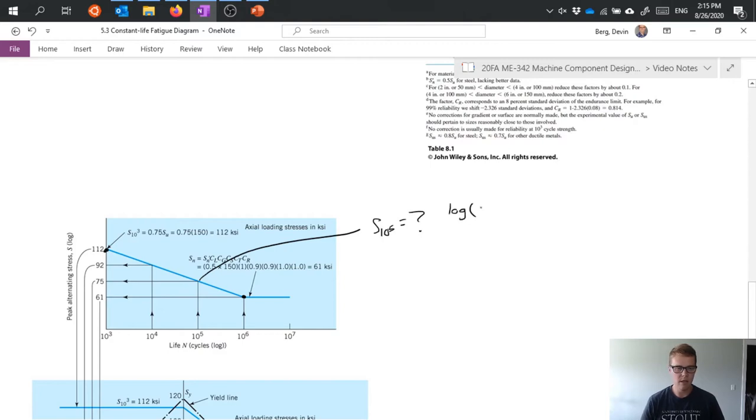So to start our linear interpretation we basically take two known quantities and do like a rise over run type calculation. So I need to remember this is log and my first point that I know is 112 over here that's my 10 to the third limit and my other point that I know is my endurance limit of 61. And my x-axis change so this is the run of my rise over run is 10 to the third to 10 to the sixth. Now I would also be using log scale here but if you recall log is base 10 so log of 10 to the something means that I just take that power and move it out front and the log and the 10 cancel so I can say 3 minus 6 and that's the same thing as using the log scale in this case.